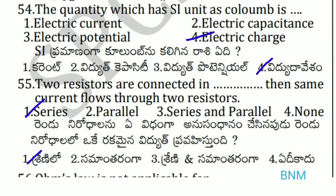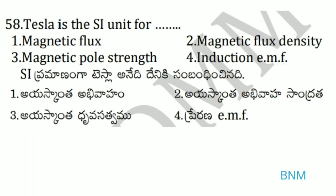The SI unit tesla is related to magnetic flux density. The SI unit of magnetic flux density is tesla, so the 2nd option is correct.